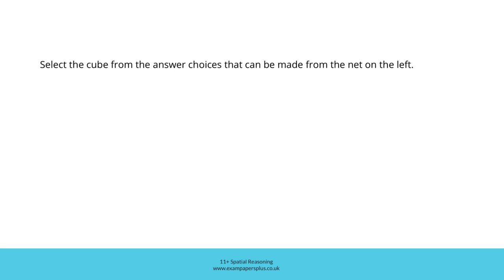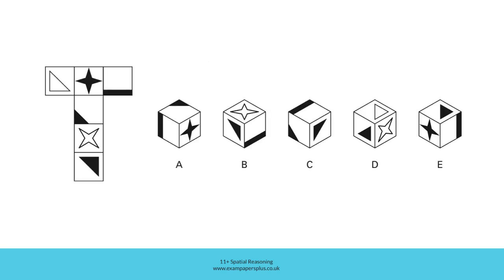Now you can try a second similar question. Remember, select the cube from the answer choices that can be made from the net on the left. In order to answer this second question, you're going to consider this net — a net for a cube once again — and the cube which would be created from that net is represented by one of these five answer options. When you're ready, pause the video and try to work out the right answer within 30 seconds. When you've finished working, resume the video and we'll check the answer together.